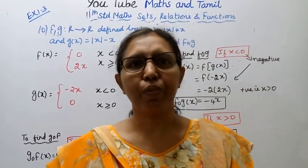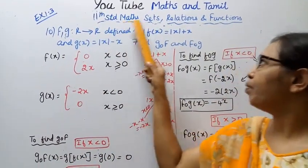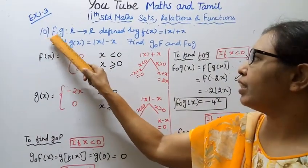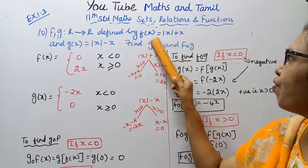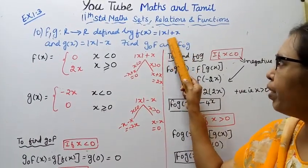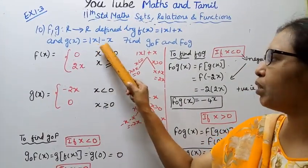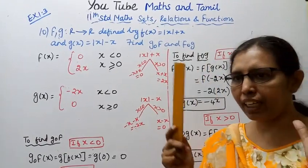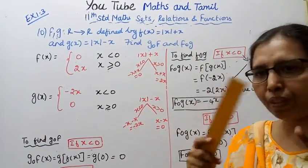Hello students, welcome to Max and Tumble channel. This is Class 11 standard Maths, Relations and Functions, Exercise 1.3. f and g from R to R are defined by f(x) = |x| + x and g(x) = |x| - x. Find g of f and f of g.